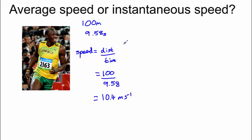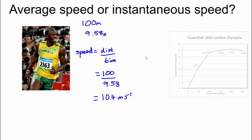What would have happened if instead of measuring the time for the entire race, we instead measured the time for the first 50 metres? Then we'd have divided 50 metres by whatever that time was and we'd have a different average speed. What if we'd just done the first 10 metres? Or the first 5 metres? Or just 1 metre? What if we chose the shortest possible distance that we could accurately measure the time of and used that to work out the athlete's speed? Well, that gives us the instantaneous speed.